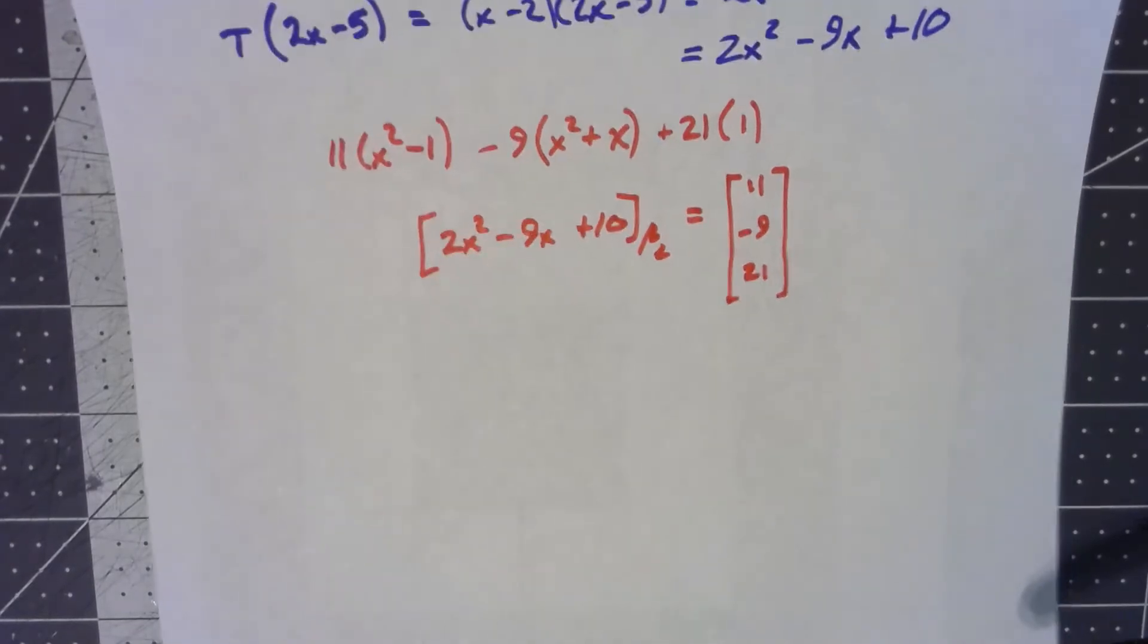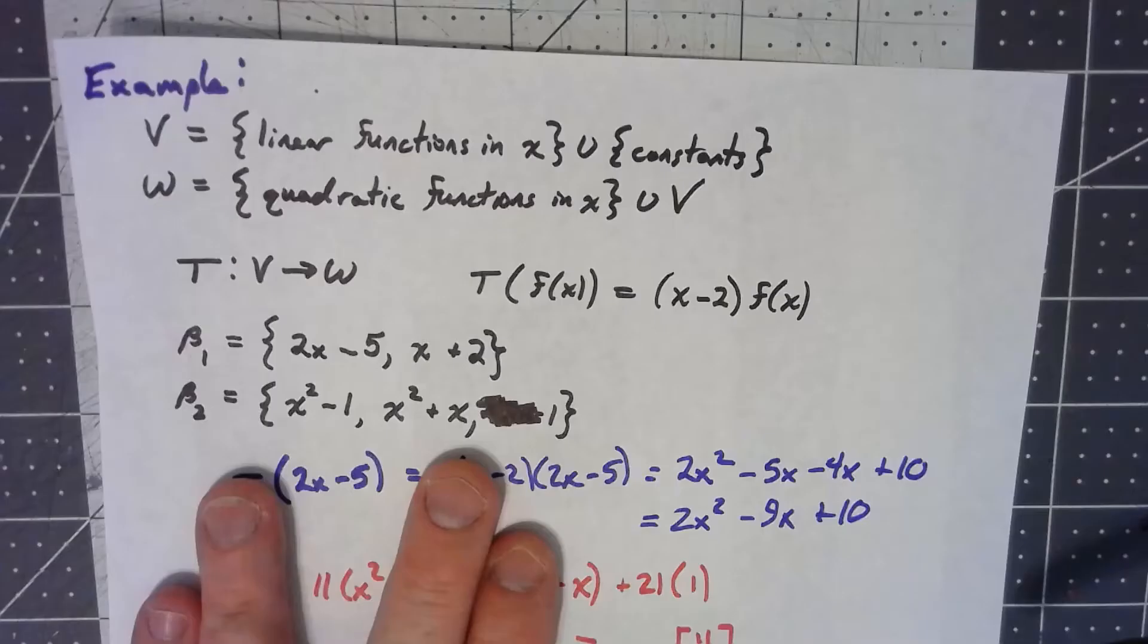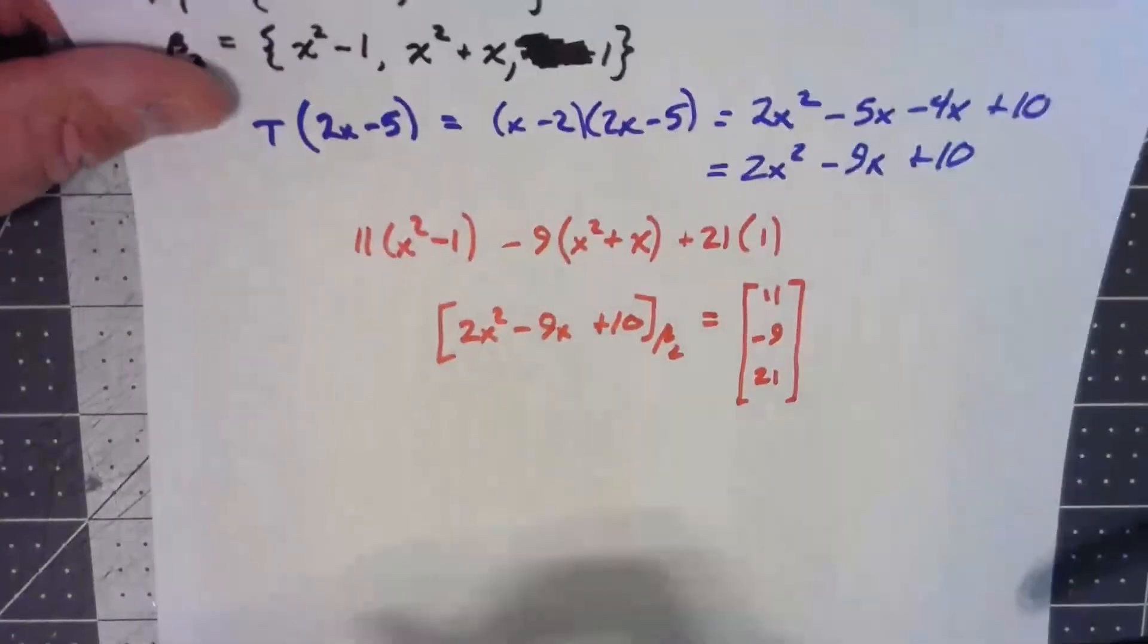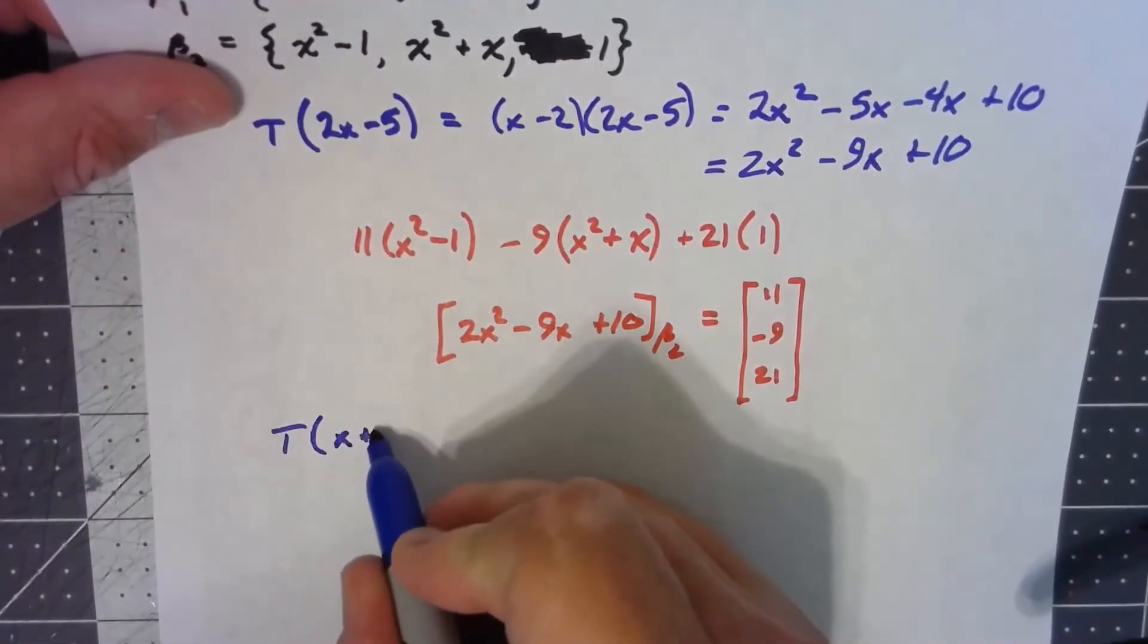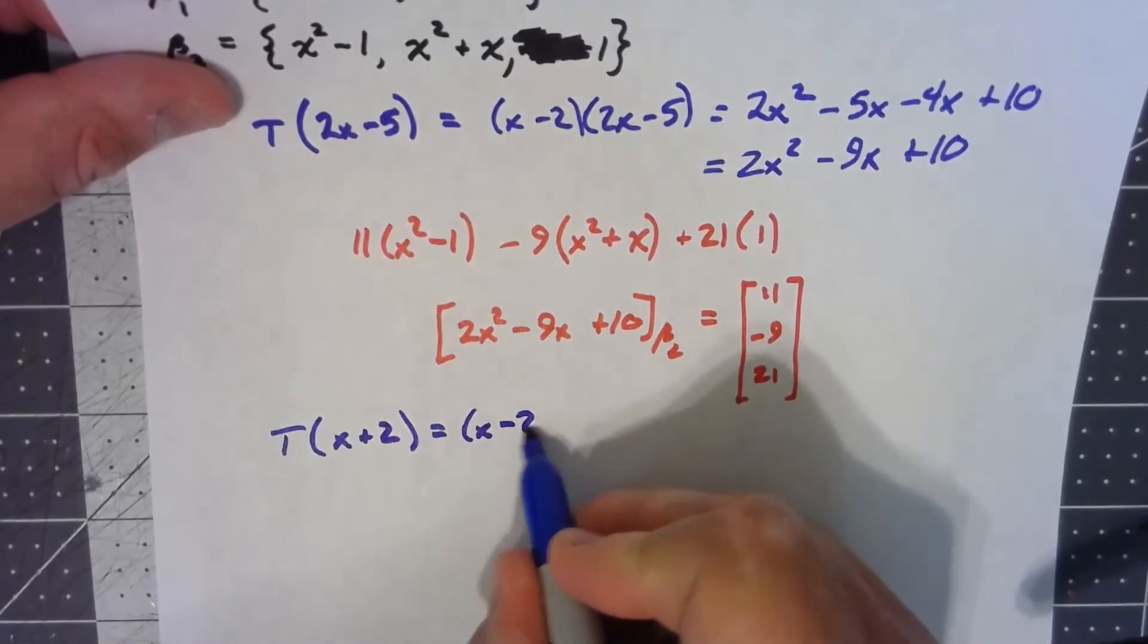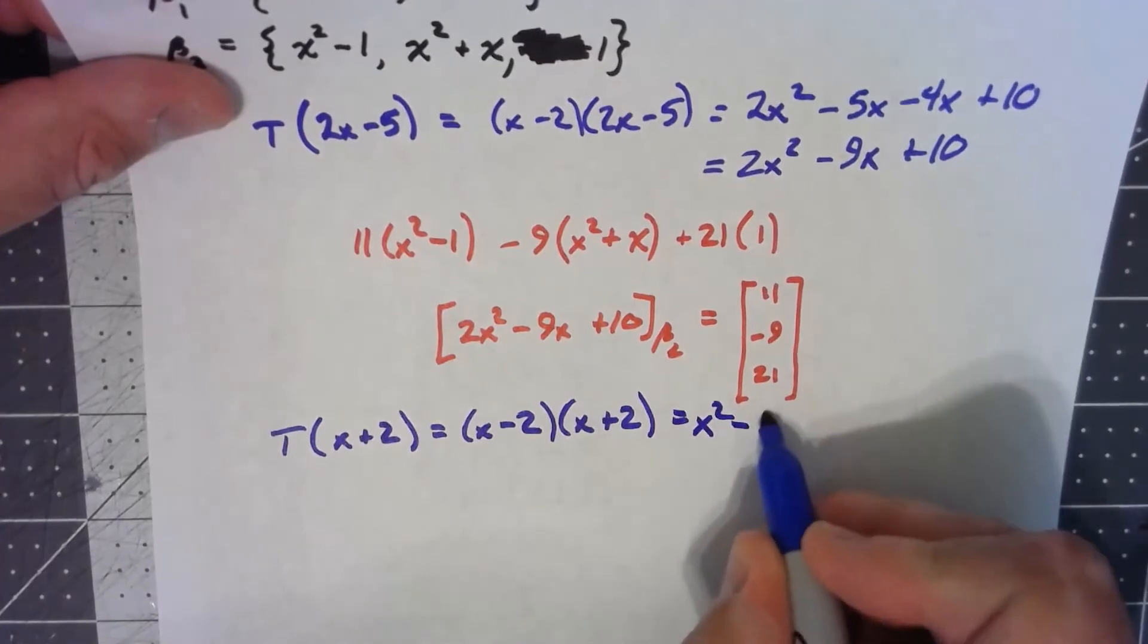Okay, let's repeat that process for the other basis vector. The other basis vector for V was x plus 2, so I need to figure out what is T of x plus 2. That's x minus 2 times x plus 2, which is x squared minus 4.